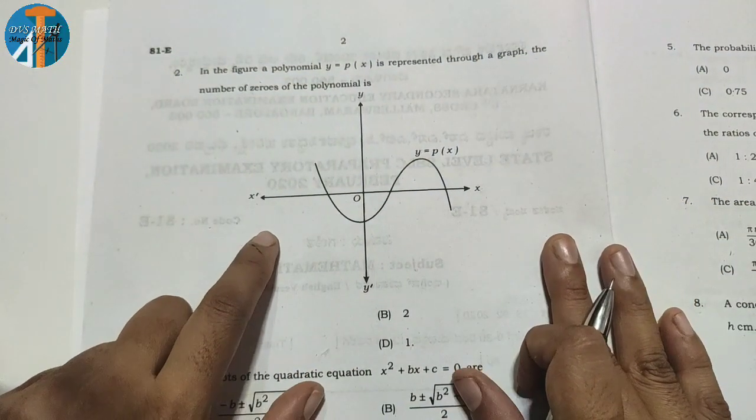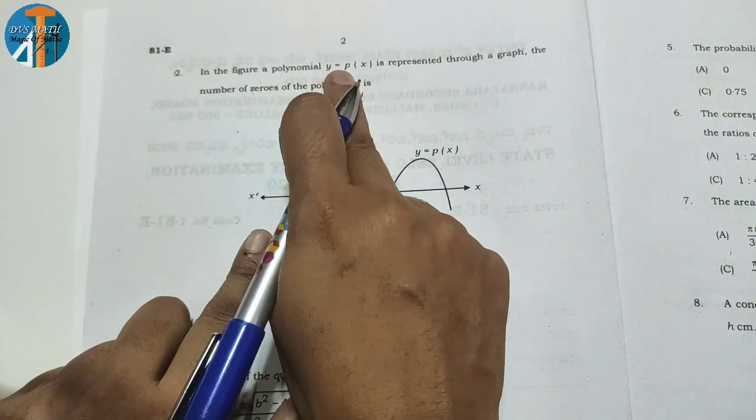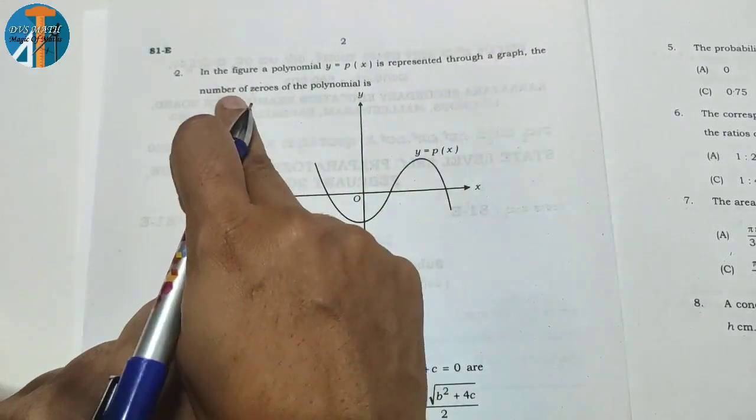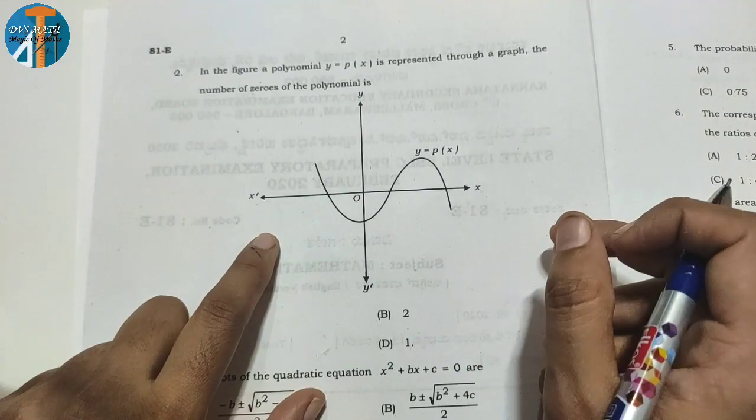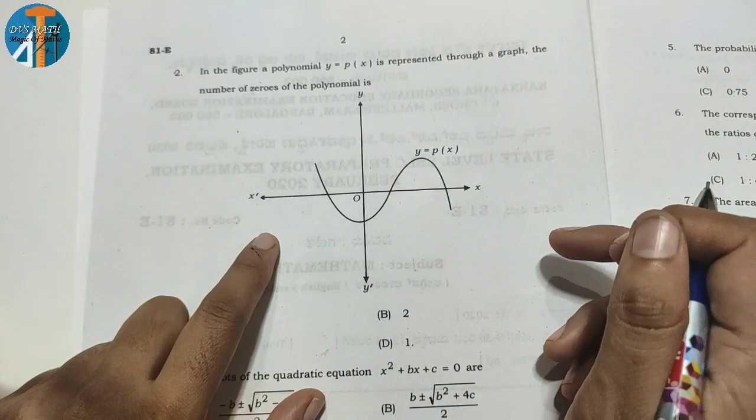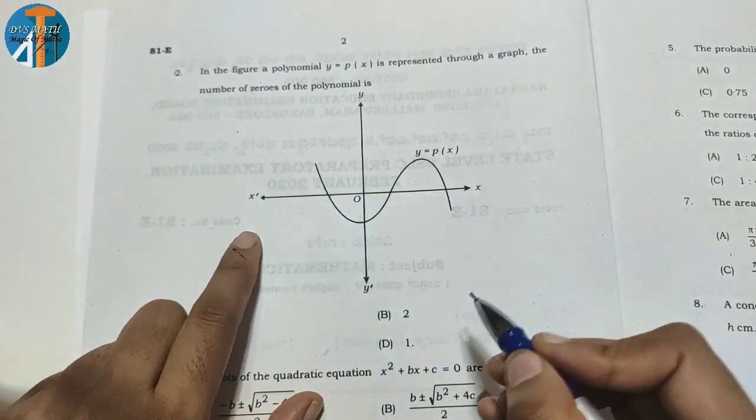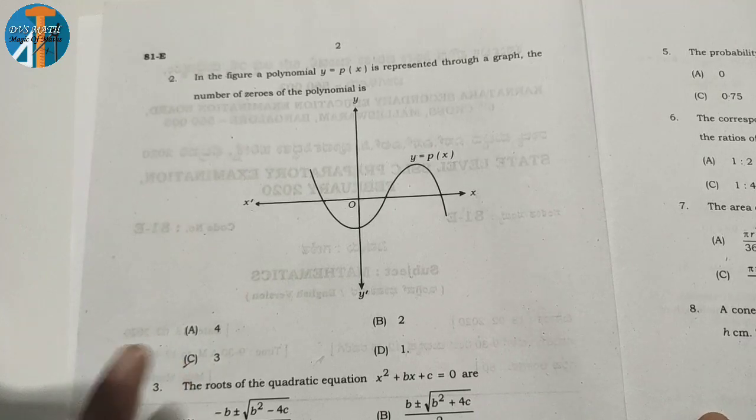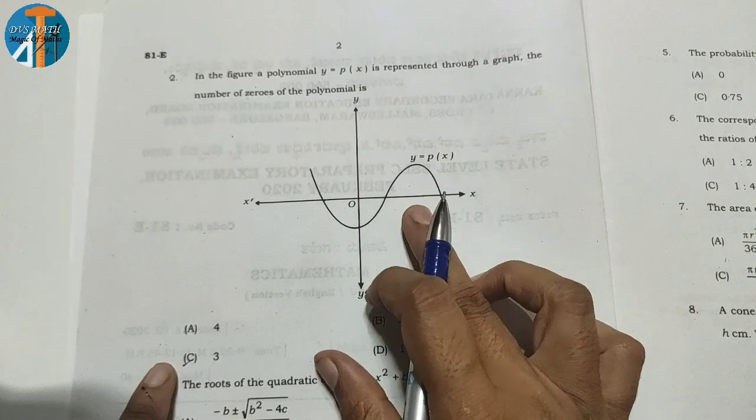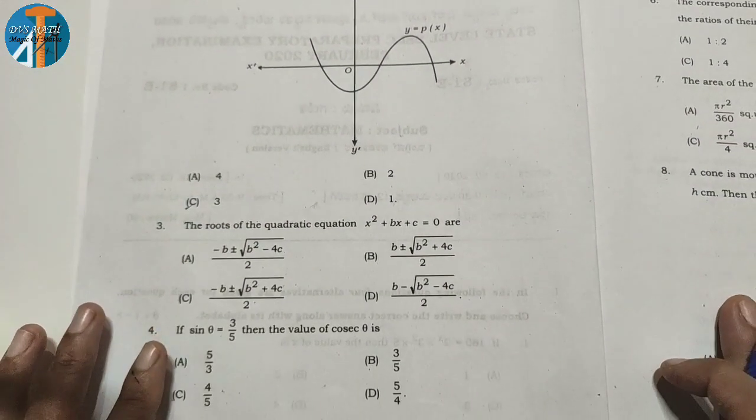Next question: In the figure, a polynomial p(x) is represented through the graph. The number of zeros of the polynomial? The number of zeros means where it intersects or touches the x-axis. One point, two point, three point - the number of zeros is 3. So we have 3 as the answer. It's easy to answer this question in your workout.